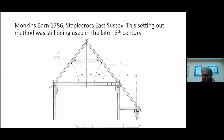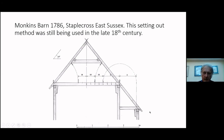Monkey's Barn, which is 1786, shows that this setting out method was still being used as late as the 18th century. This barn worked out ideally for setting out the collars, rafter length, and the aisles.